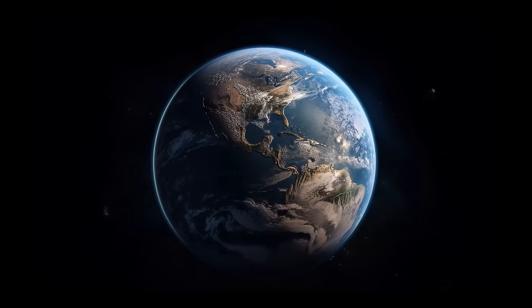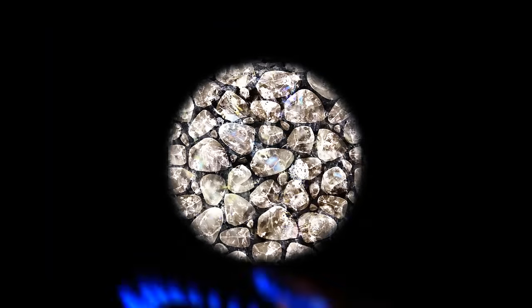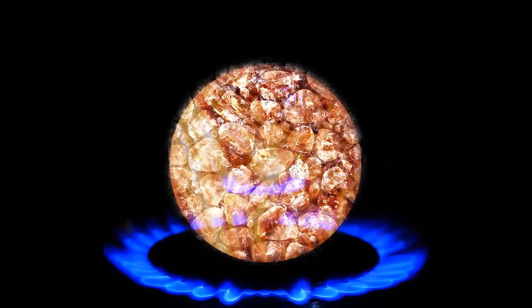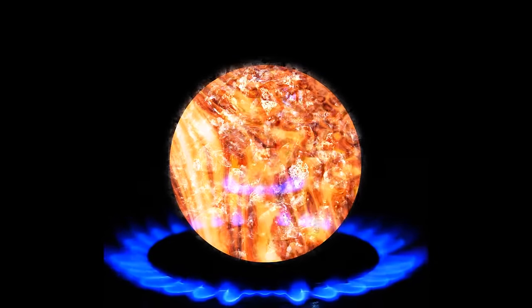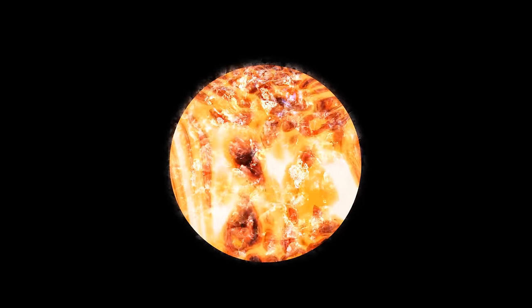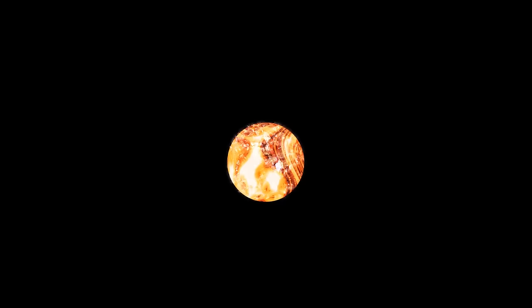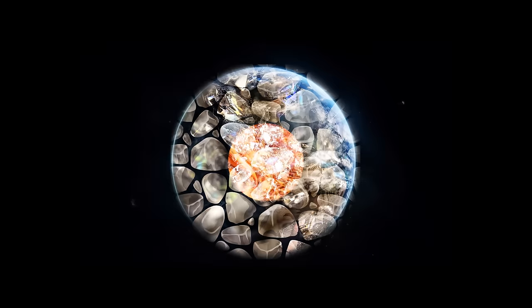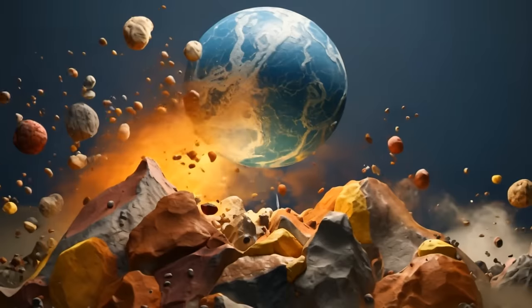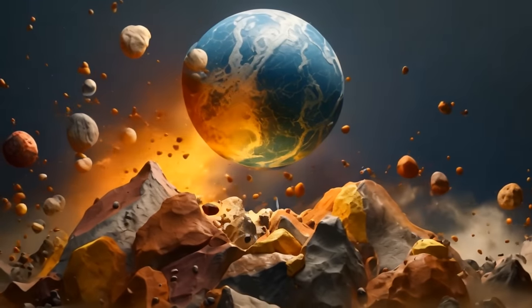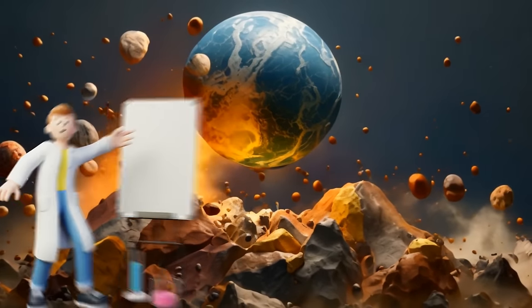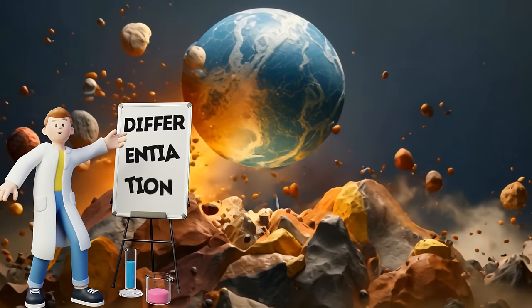Picture Earth as a mixed-up bag of rocks, metals, and minerals. But as things heated up, the rocks and metals got so toasty that they melted. And guess what? The denser metal sank to the center and became Earth's core, while the lighter rocky stuff floated up to become the crust and mantle. It was like Earth decided to unmix itself, creating separate layers. Scientists call this wild separation differentiation.